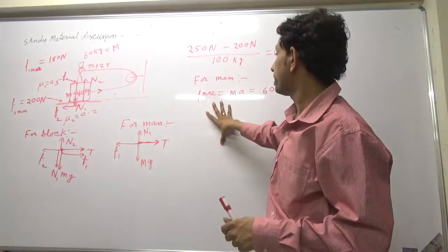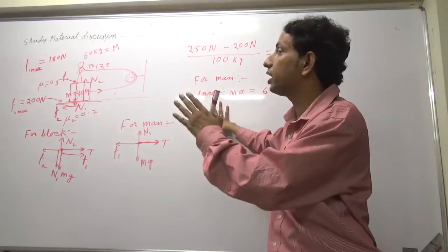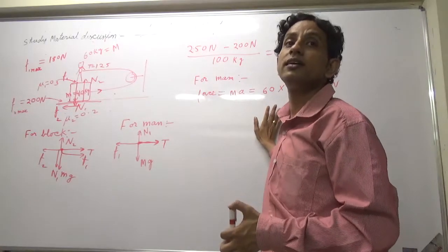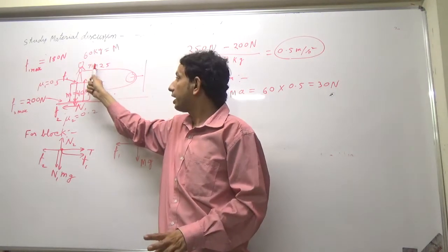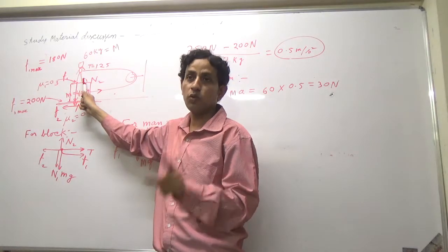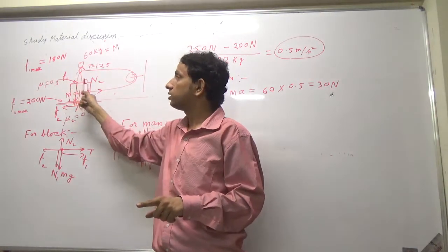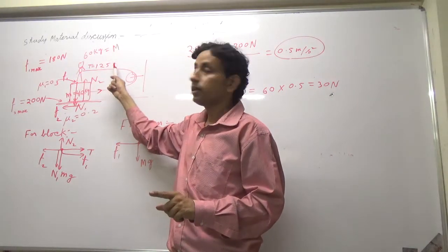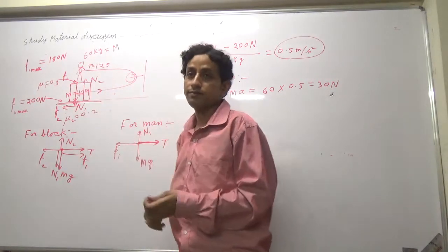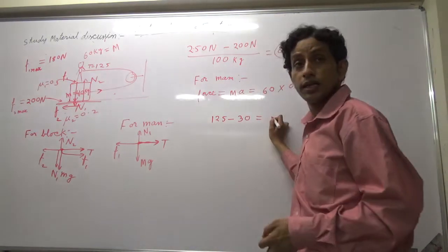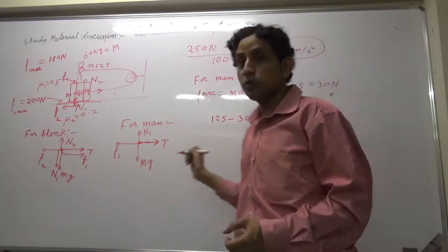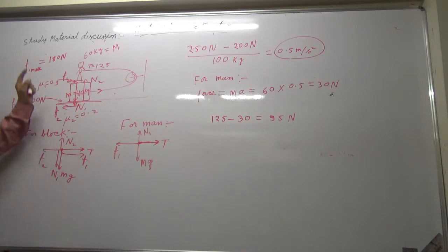if we write the acceleration, force for man required is 60 into 0.5, that is 30 newton. This force is fixed 125 N, and the man has only one other source of horizontal force, that is friction from the surface. 125 minus 30, that is 95 N. So 95 N in backward direction. Friction maximum value is 180 N. It means the man will not slip on the surface.